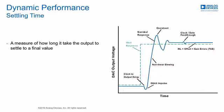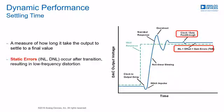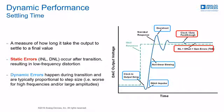DAC errors may be broken into two categories: static and dynamic. Static errors are observed after the output has settled to a new value and are typically caused by element mismatches that result in non-ideal linearity characteristics or gain errors. Low-frequency spurious-free dynamic range performance can be closely correlated to DC linearity performance and can also impact small-signal spurious-free dynamic range at higher frequencies. Dynamic errors occur during a code transition and are usually dependent on the step size, typically dominating at higher output frequencies.